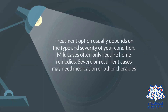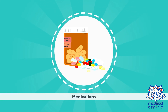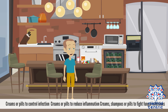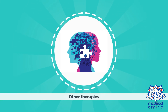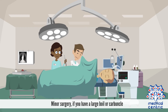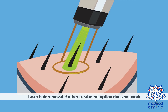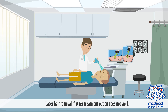Treatment options usually depend on the type and severity of your condition. Mild cases often only require home remedies, while severe or recurrent cases may need medication or other therapies. Medications include creams or pills to control infection, creams or pills to reduce inflammation, and creams, shampoos, or pills to fight fungal infections. Other therapies include minor surgery if you have a large boil or carbuncle, or laser hair removal if other treatment options do not work.